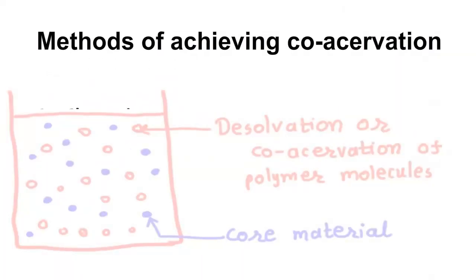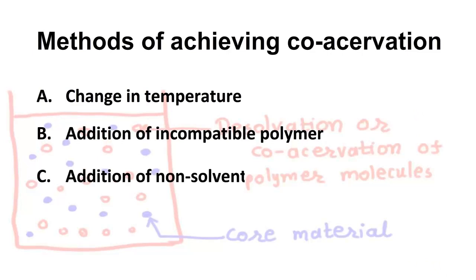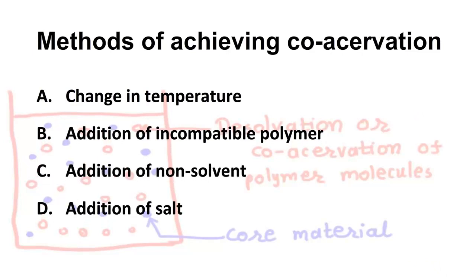Methods of achieving coasservation: A. Change in temperature. B. Addition of incompatible polymer. C. Addition of non-solvent. D. Addition of salt. E. Polymer-polymer interaction.